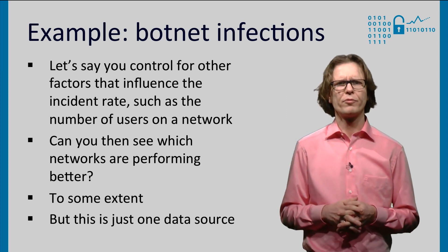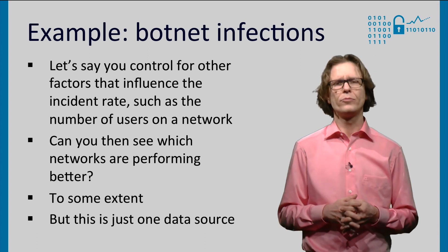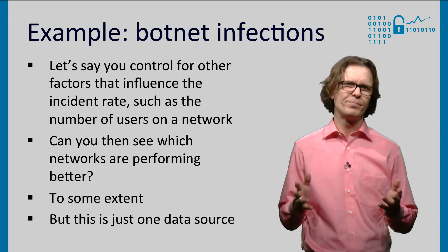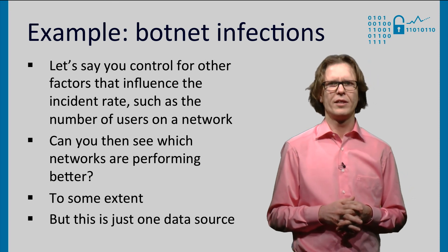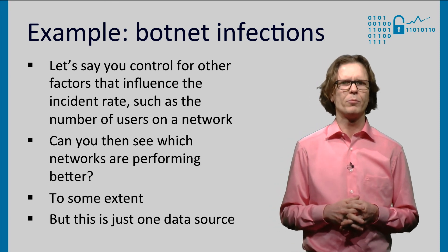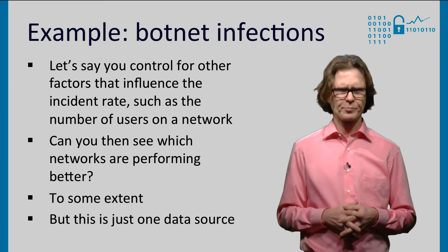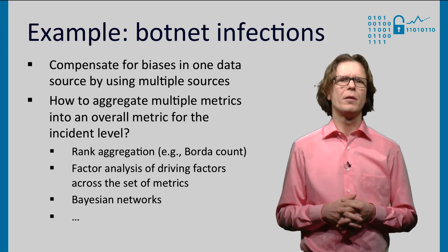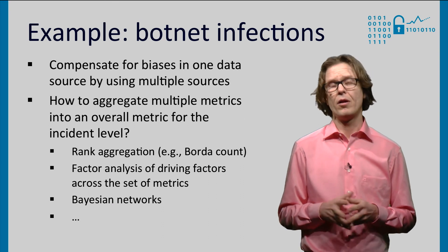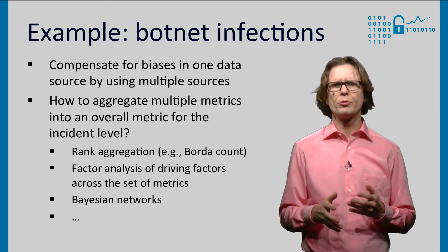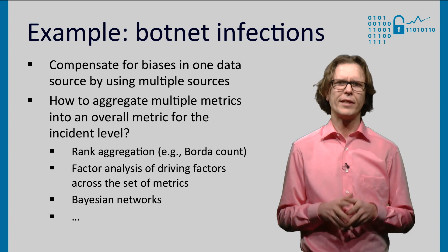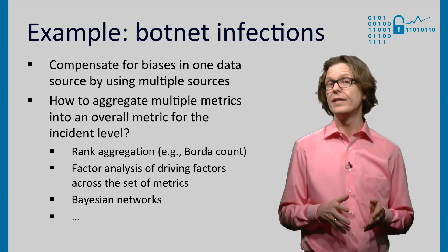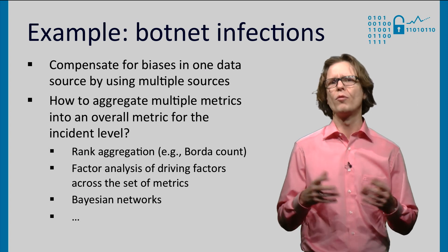Could you then see which networks are performing better? Yes, to some extent. But this is just one data source — one limited slice of the problem with its own biases, remember? You could try to overcome this bias by including multiple data sources on infections. Each would result in a different metric, and that's a good step forward, but it also introduces the question of how to then aggregate these metrics into an overall metric.